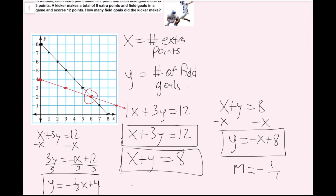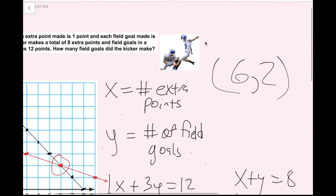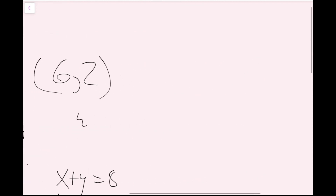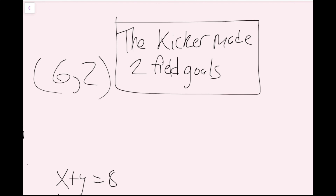The solution is the ordered pair (6, 2). The question asks how many field goals did the kicker make. Since I assigned y as the number of field goals, and y equals 2, the kicker made two field goals. That's my word answer: the kicker made two field goals.